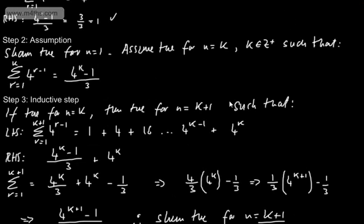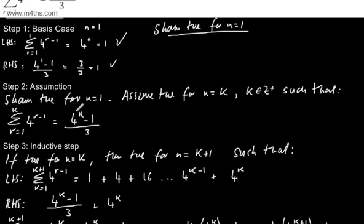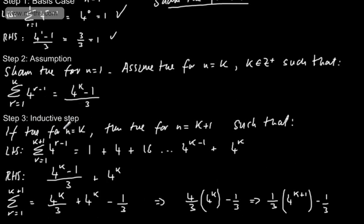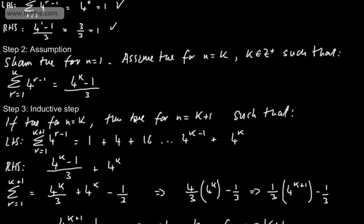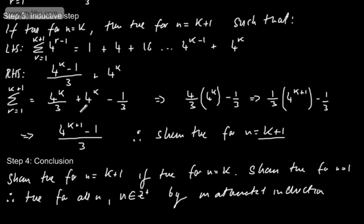That's our second example of a summation. To recap: basis case — let n equal 1 and sub into both sides; assumption — shown true for n equals 1, now assume true for n equals k where k is a positive integer; inductive step — if true for n equals k, show true for k plus 1 using algebraic manipulation or rules of indices; conclusion — true for all n, positive integer, by mathematical induction. Depending on your exam board, you may not always need such a lengthy process, but this gives you a solid platform for the four steps.